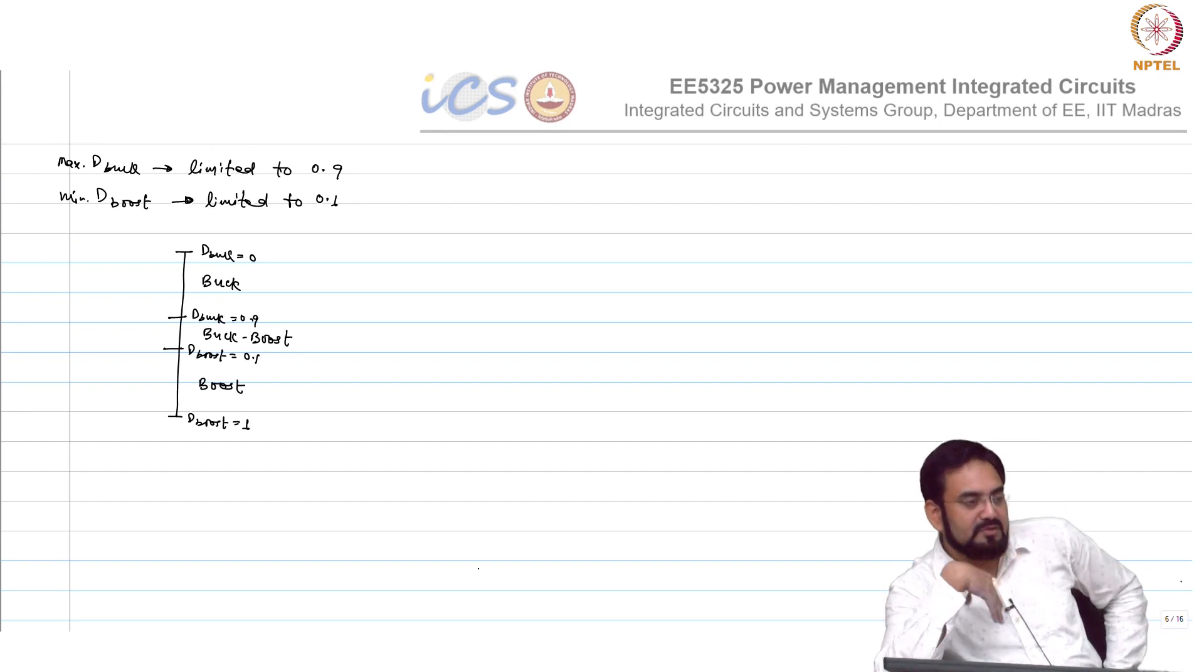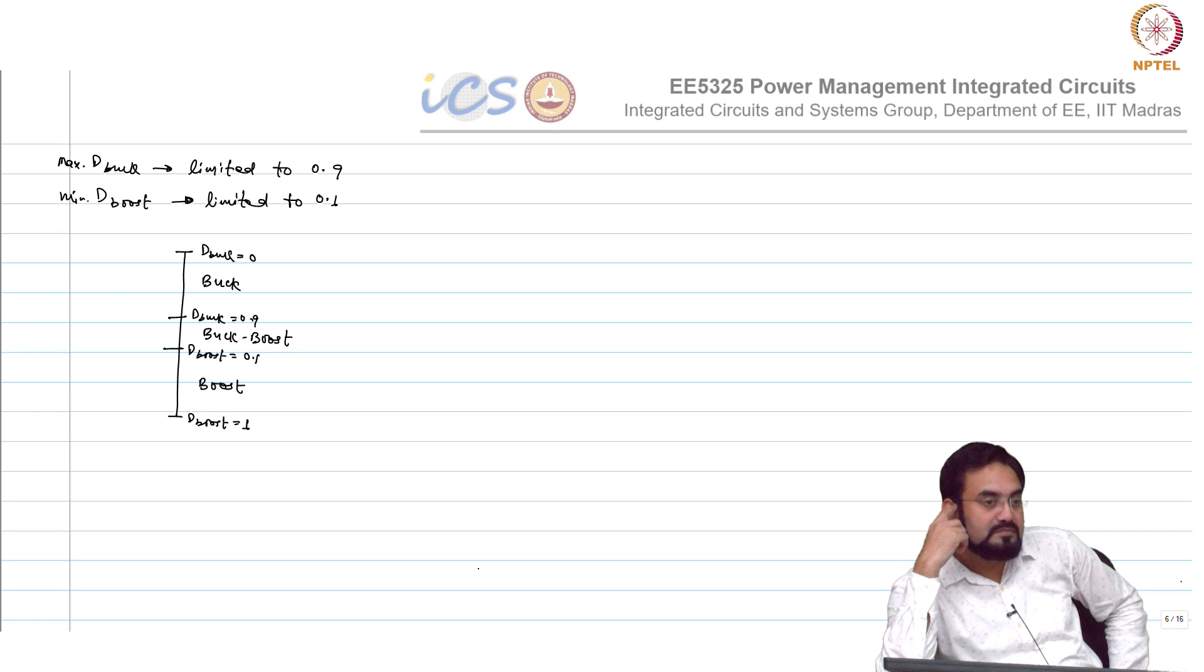Why cannot we enter directly from buck to boost? Can we do that? When you go 0.9 buck, then you go to 0.9 boost from there. Only 10 percent increase in the inductor current.